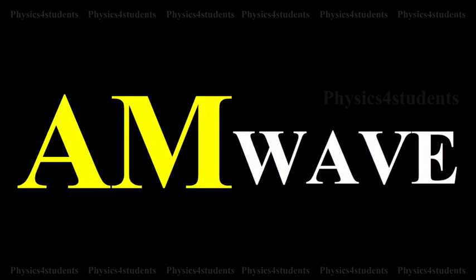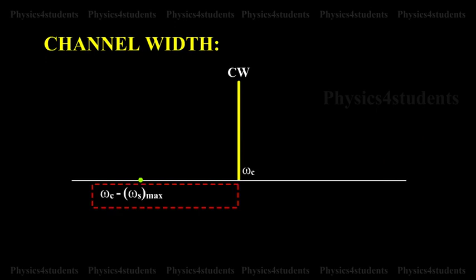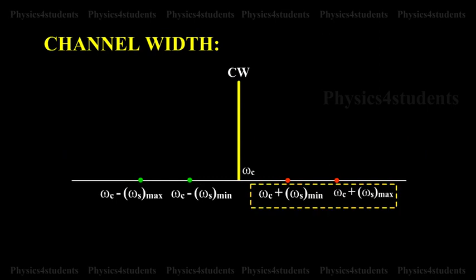Bandwidth. In an AM wave, the bandwidth is from omega c minus omega s to omega c plus omega s, i.e., twice the signal frequency.